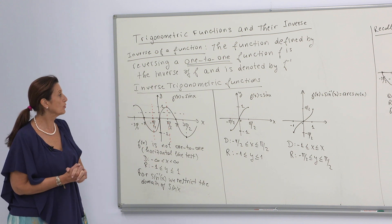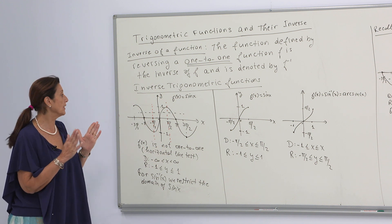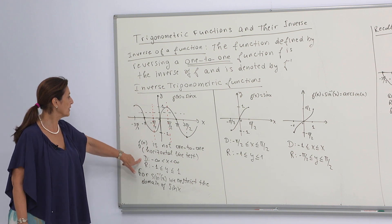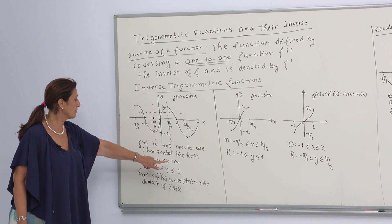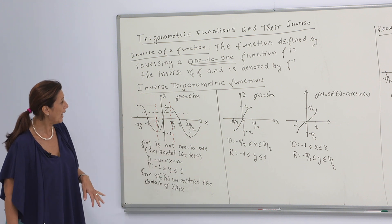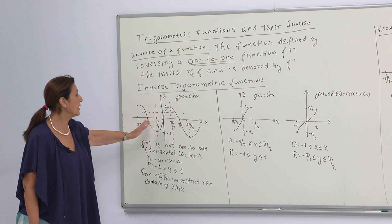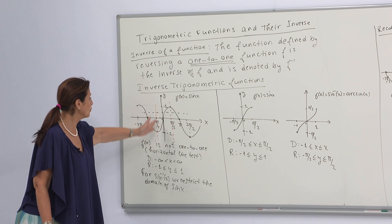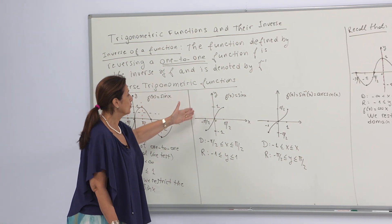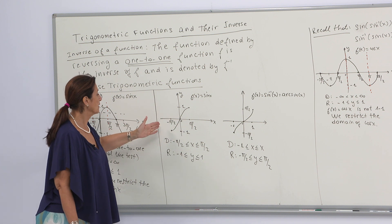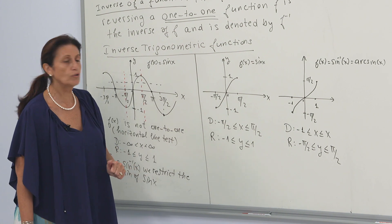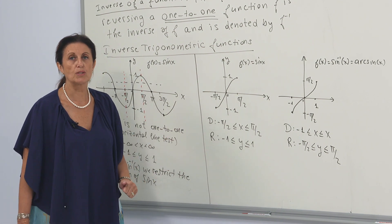To obtain the inverse of sine, we need to restrict our domain. What is the domain and range of the sine function? The domain is from minus infinity to plus infinity and the range is from minus 1 to 1. We restrict this domain from minus π/2 to π/2 to be able to obtain the inverse of the sine function. Here you see the graph of the restricted domain of the sine function. My domain is minus π/2 to π/2 and the range is minus 1 to 1.